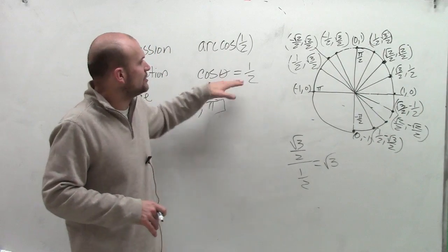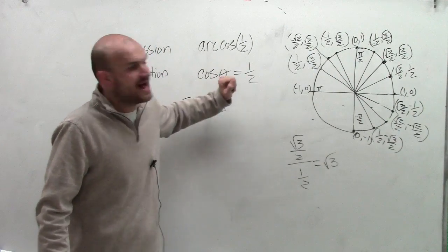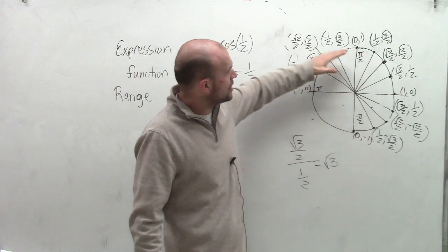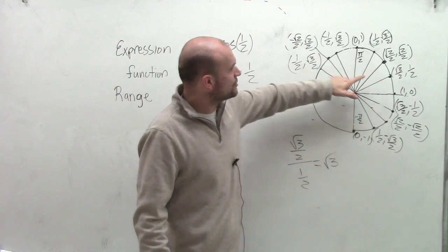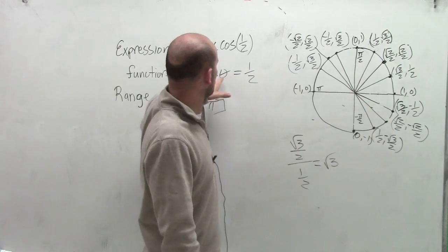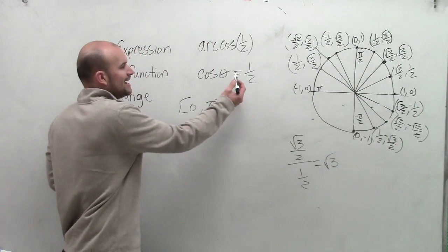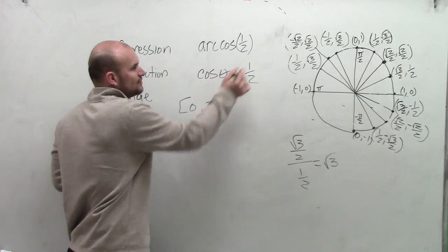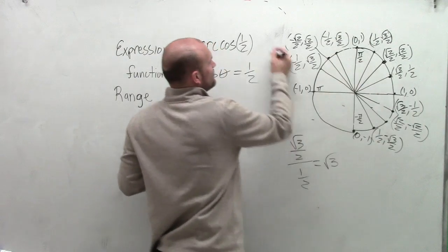What x-coordinate do I have that's equal to 1 half? So when I follow along here, I see that my x-coordinate equals 1 half at the angle of pi over 3.